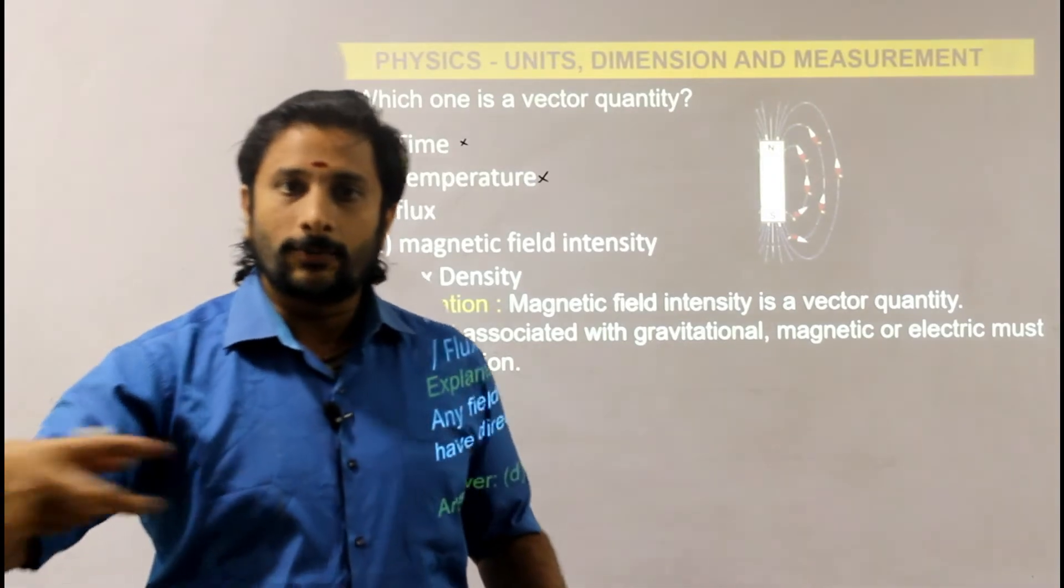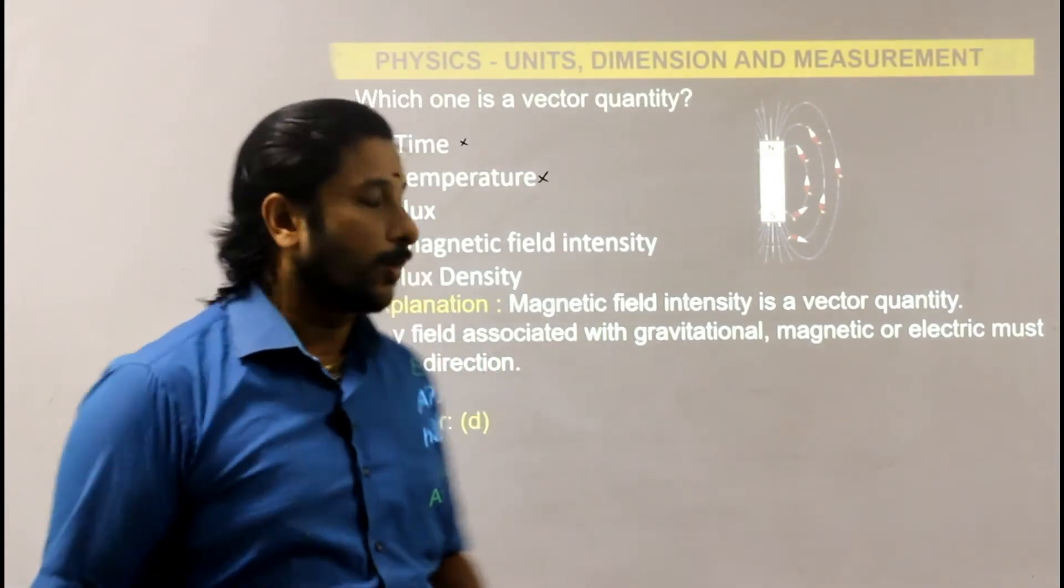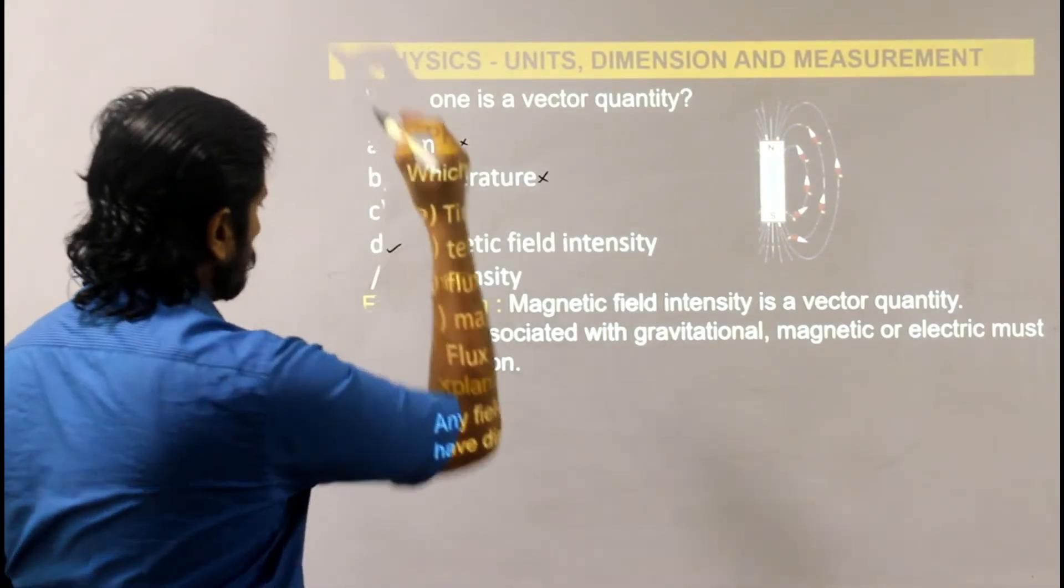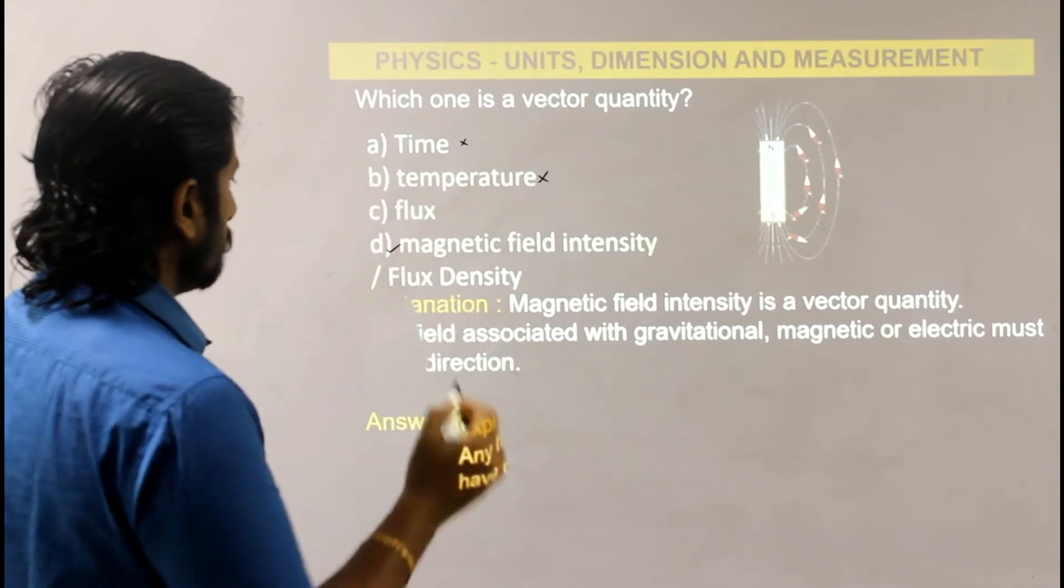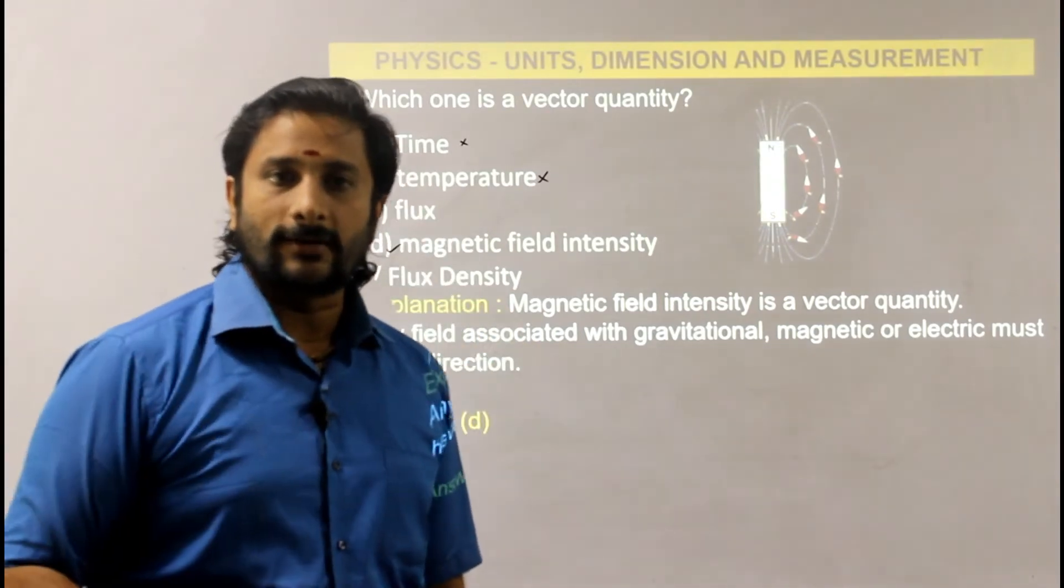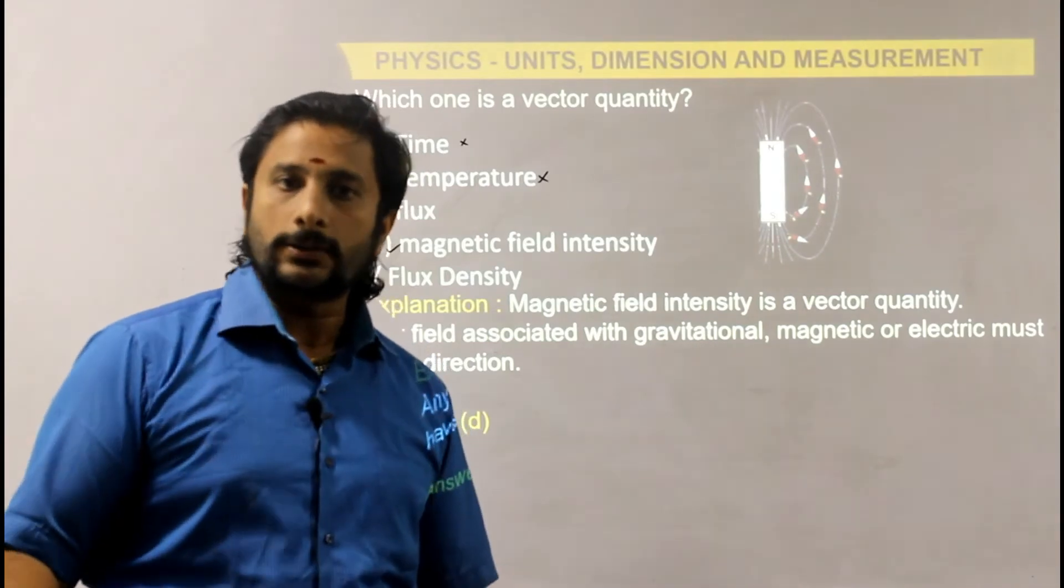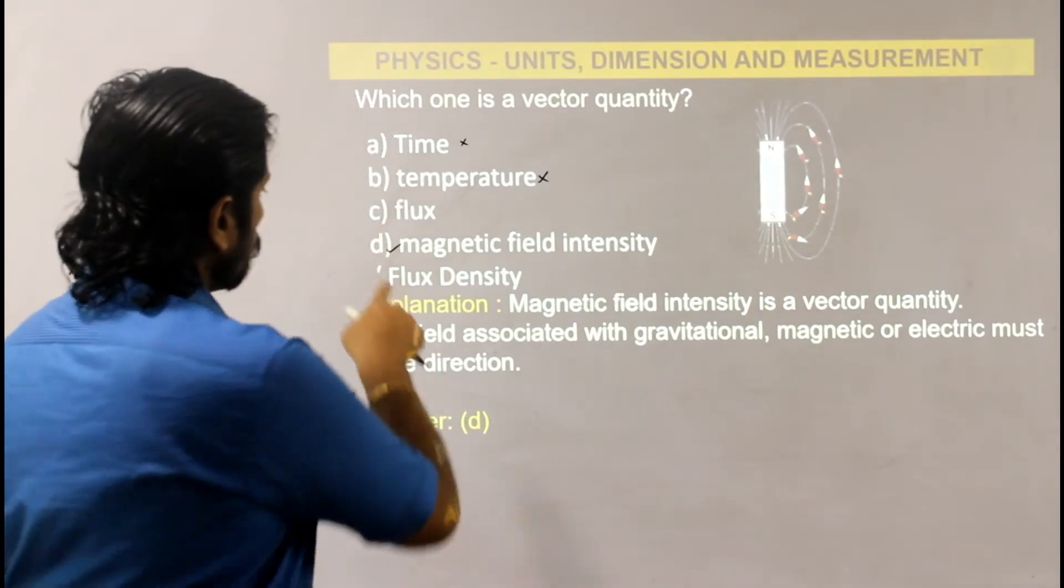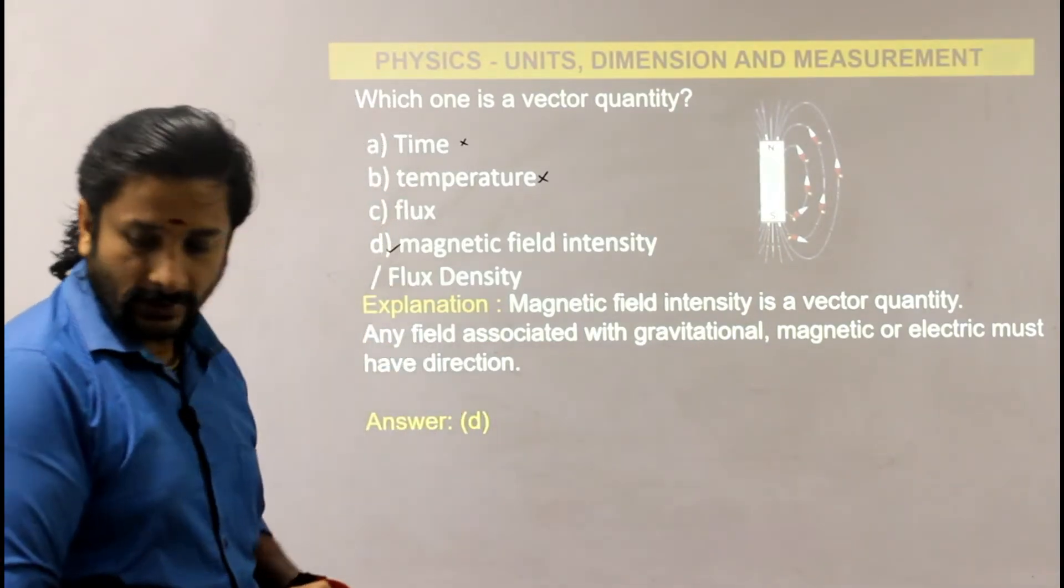But flux density or magnetic field intensity - this has direction. The direction of the field lines. So option D is the answer - magnetic field intensity or flux density has direction.